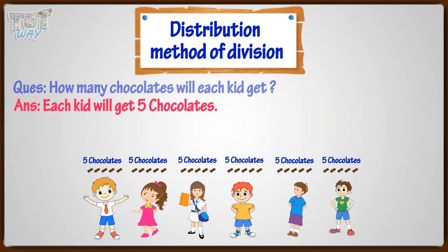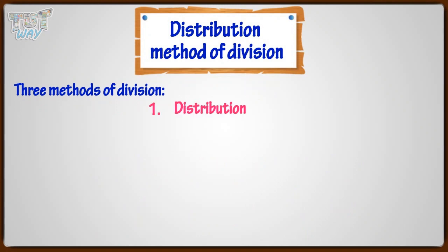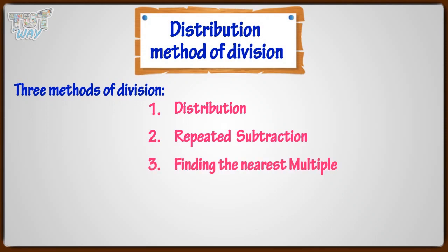Now we have learned three methods of division. One is the distribution. Another is repeated subtraction. And the third is finding the nearest multiple.